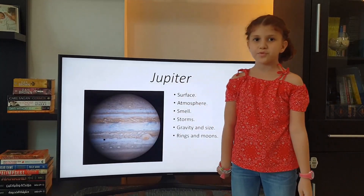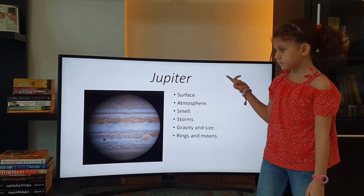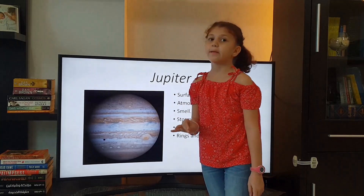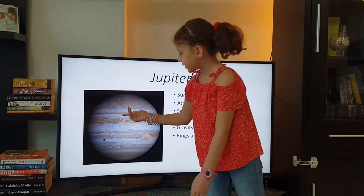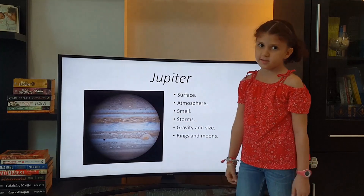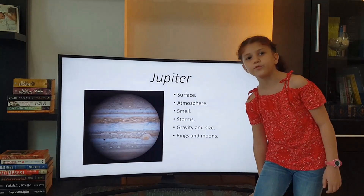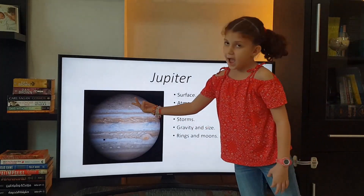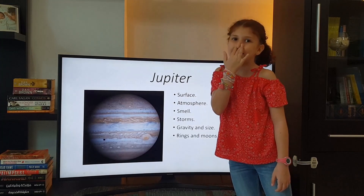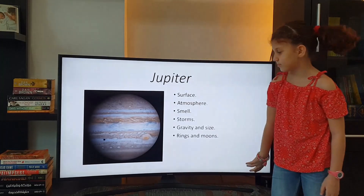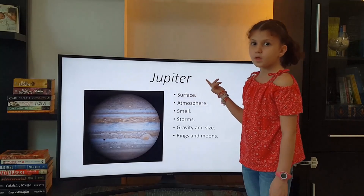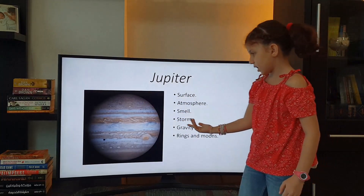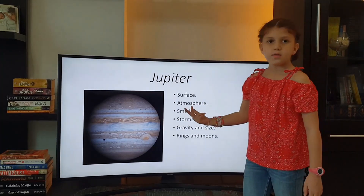Jupiter is the fifth planet from the Sun and the biggest planet. Its surface is not liquid water and it's not solid — it's liquid metallic hydrogen. Its atmosphere is very thick, but that doesn't mean it's hot. It's cold because it's far away from the Sun. The atmosphere is the second thickest of all the solar system after the Sun. Jupiter has a bad smell, like socks that haven't been washed for about a week, because of methane in its atmosphere. Jupiter's gravity is huge because of its size — the bigger the size, the stronger the gravity.